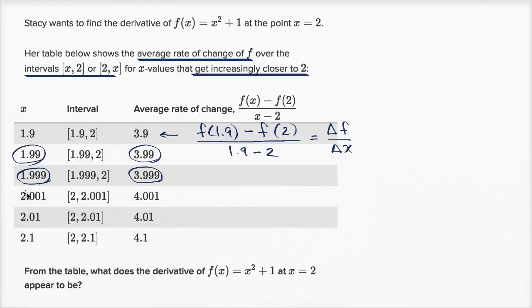Then she goes on the other side of 2. You could view this as x approaching 2 from the left-hand side, and this is x approaching 2 from the right-hand side. When it's 2.1, the average rate of change is 4.1. When it's 2.01, we're getting closer to 2, and the average rate of change is getting closer to 4.